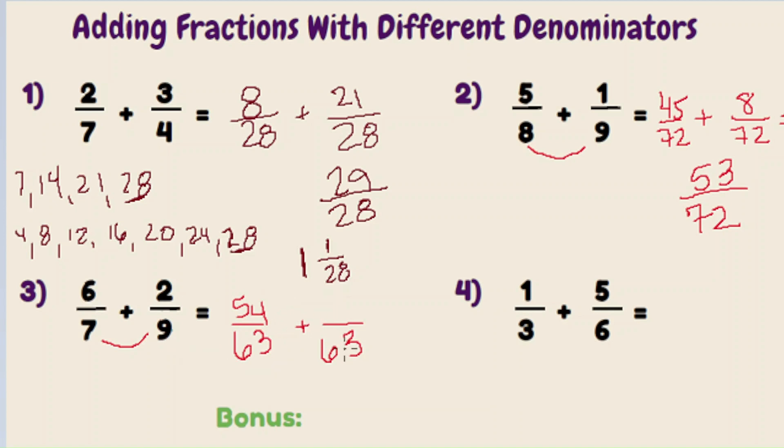Nine goes into sixty-three seven times. Two times seven is fourteen. If you add these across, you're going to get sixty-eight over sixty-three. And that's an improper fraction, meaning your numerator is bigger than your denominator. So you can convert this to a mixed fraction by saying sixty-three goes into sixty-eight one time with five left over. Five over sixty-three.